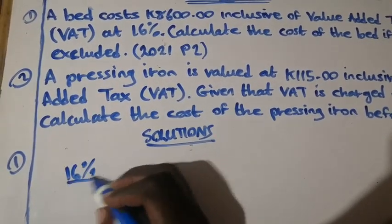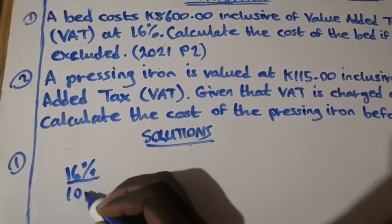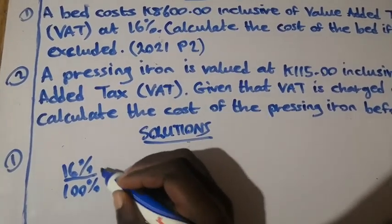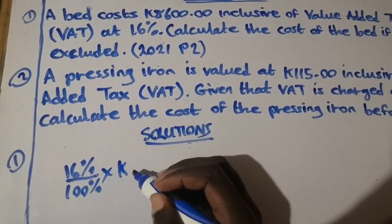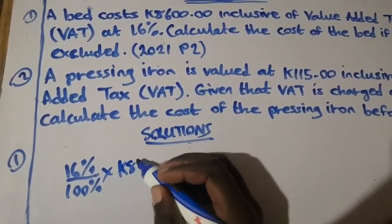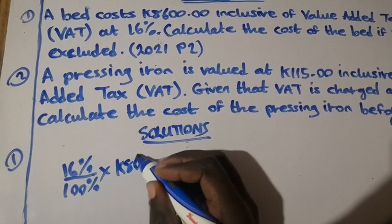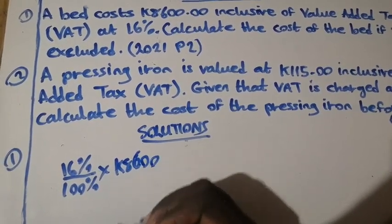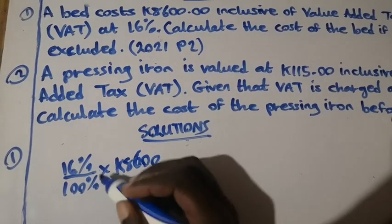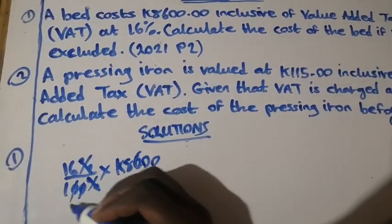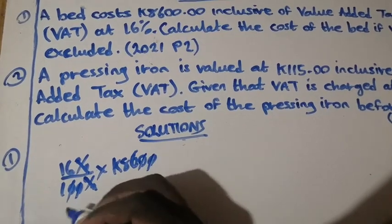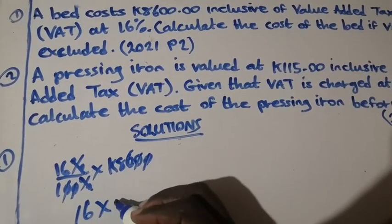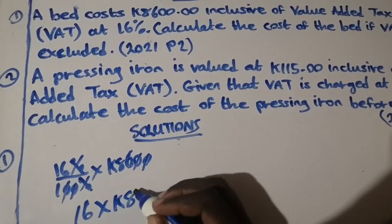So, 16%. Remember, percentages add up to 100. So, 16% times the total amount, which is 8,600. After cancelling the percent, we are left with 16 times 86.